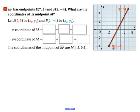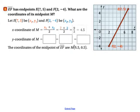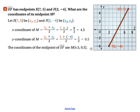Here's an example in the xy coordinate plane. We have point E with coordinates (7, 5) and point F with coordinates (2, negative 4). To find the x-coordinate of the midpoint, we add the first coordinates: 7 plus 2 is 9 divided by 2, which is 4.5. For the y-coordinate, we add the second coordinates: 5 plus negative 4 is 1, divided by 2 is 0.5. So the coordinates of the midpoint are (4.5, 0.5) — go over 4.5 units and up one half, which would be right about there on the figure.